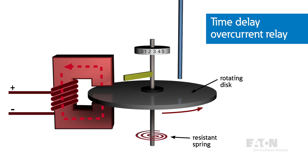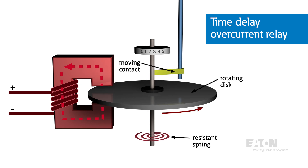Current passing through the relay produces torque that rotates the disc. When the current, and therefore the torque, is great enough, the disc will rotate such that the moving electrical contact on the disc touches a stationary contact, triggering breaker operation. The current level required to trip and the time to trip are specific to the power system in which the relay is applied, and is set by positioning screws or pins at the front of the relay.